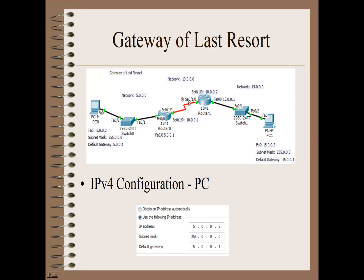The second router has serial port SE0/1/0 with IP address 10.0.0.2. So we've got two IP addresses in network 10.0.0.0 - .1 and .2. Our third network, 15.0.0.0, starts on the far side of the router with a fast ethernet port using the first IP address 15.0.0.1. The second IP address, 15.0.0.2, is assigned to PC1 with a class A subnet mask of 255.0.0.0. PC1's gateway will be that router port 15.0.0.1, so all packets from PC1 are sent to its default gateway.